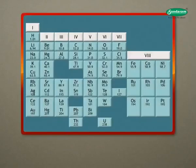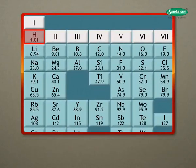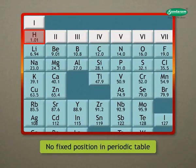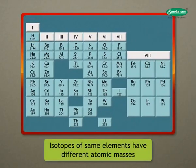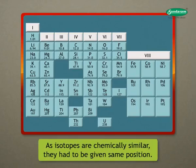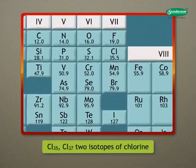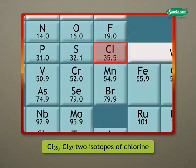Demerits of Mendeleev's periodic table: Hydrogen resembles alkali metals as well as halogens. Therefore, no fixed position could be given to hydrogen in the periodic table. Isotopes of the same element have different atomic masses. Therefore, each one of them should be given a different position. On the other hand, as isotopes are chemically similar, they had to be given the same position. For example, there are two isotopes of chlorine, but it is given only one place.